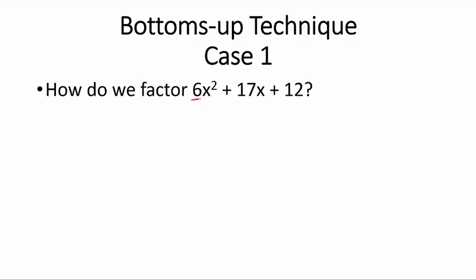This technique has several steps. The first step is to see whether there is any common factor in the three terms to pull out. That's not the case here. So the second step is to multiply the quadratic coefficient by the constant. 6 times 12 is 72.